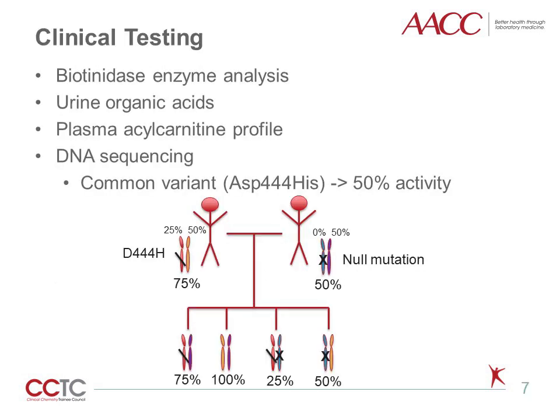Testing for biotinidase deficiency is considered high-complexity testing and typically goes to biochemical genetics laboratories. All tests used to detect abnormalities associated with biotinidase deficiency are considered laboratory-developed tests, LDTs. The most diagnostic assay is measuring biotinidase activity in plasma. An abnormal enzyme result typically leads to DNA sequencing for confirmation. DNA analysis can be helpful for partially reduced activities, particularly if there is a question about sample handling. There is a common variant where an aspartic acid is changed to histidine, causing 50% loss of activity for that allele.